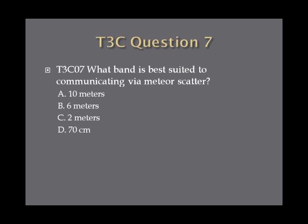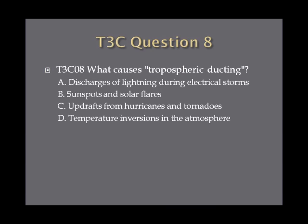Question 7. What band is best suited to communicating via meteor scatter? A. 10 meters. B. 6 meters. C. 2 meters. D. 70 centimeters. Question 8. What causes tropospheric ducting? A. Discharges of lightning during electrical storms. B. Sunspots and solar flares. C. Updrafts from hurricanes and tornadoes. D. Temperature inversions in the atmosphere.